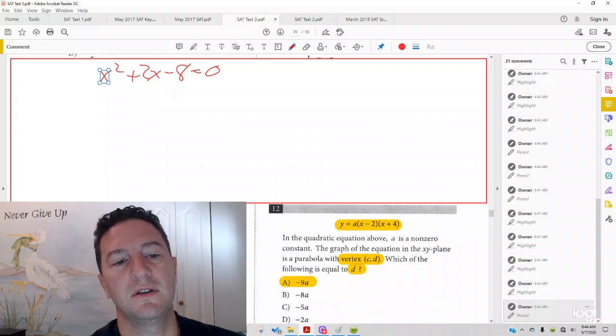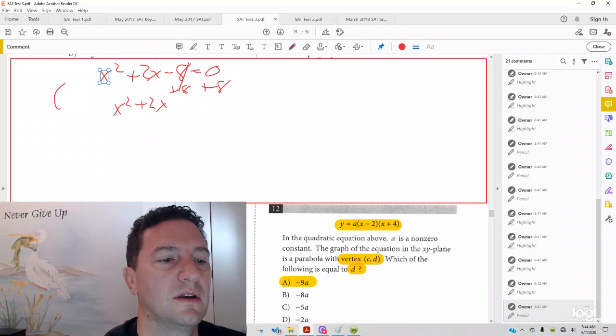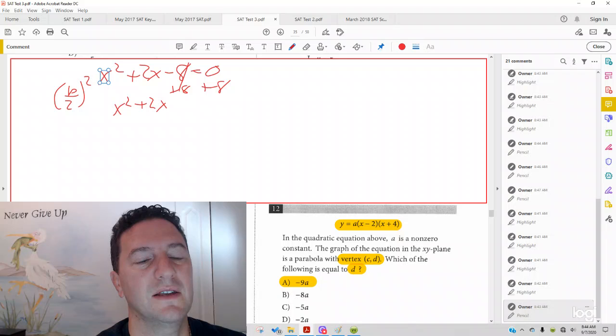In math class, usually I set it equal to 0 here. Usually you would do something like this, and you get x squared plus 2x, and it's b over 2 quantity squared. That's how you get the constant on the left, how you always form a perfect square.